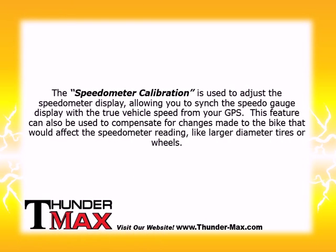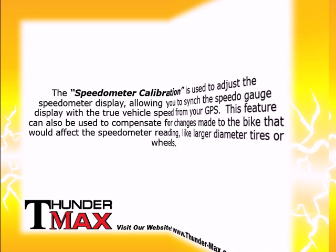The speedometer calibration is used to adjust the speedometer display, allowing you to sync the speedometer gauge display with the true vehicle speed from your GPS. This feature can also be used to compensate for changes made to the bike that would affect the speedometer reading, like larger diameter tires or wheels.